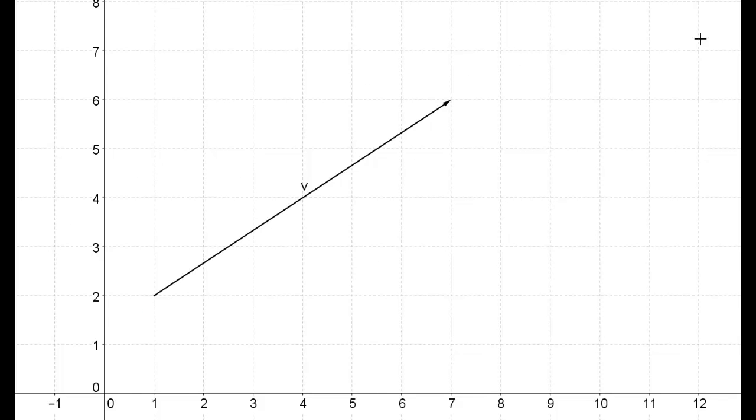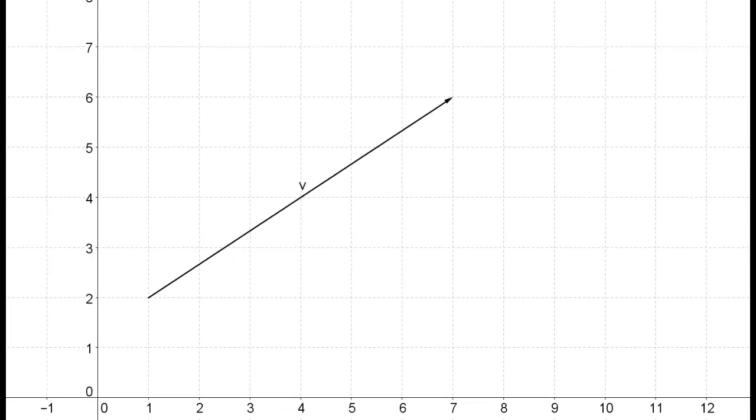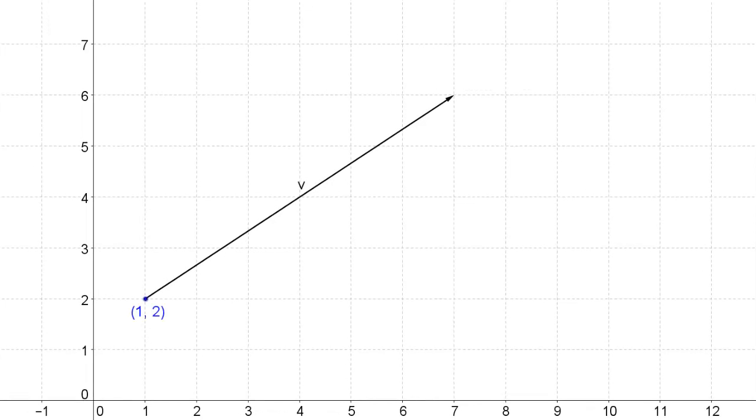So let's take a look at a vector v and try and find its magnitude. We have a vector here that begins at the point (1, 2), and then the vector ends at the point (7, 6), and we'll call that vector v. So we want to find the magnitude or length of vector v.